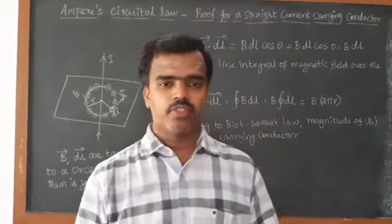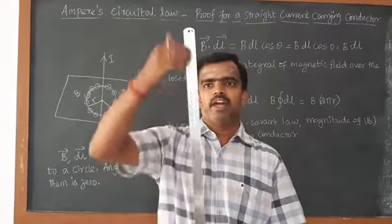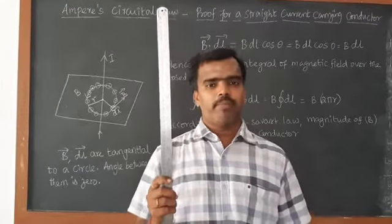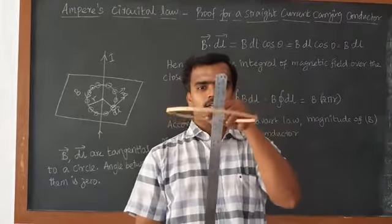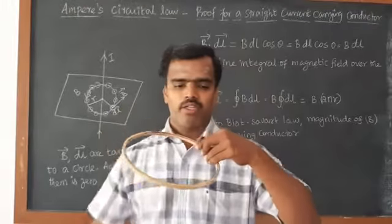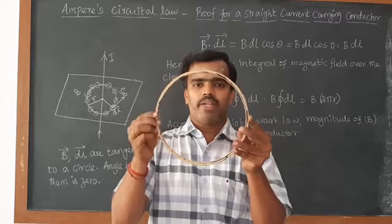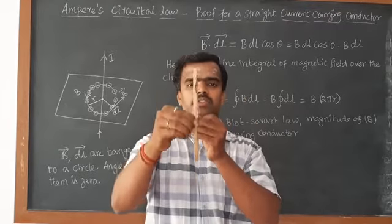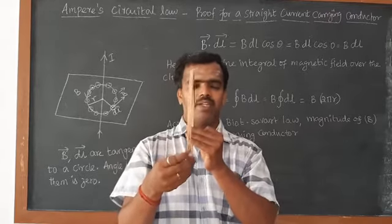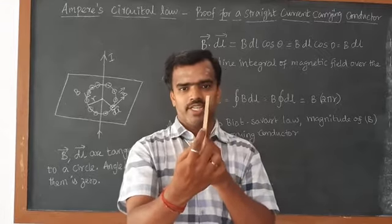Now we move on to a small demo. This is a conductor through which we are going to pass a current in the upward direction — out of the paper. What will happen is that a magnetic field will be produced. This circular ring represents the magnetic field. This circle has small elements; the small portion in that circle is what we call the element dL.